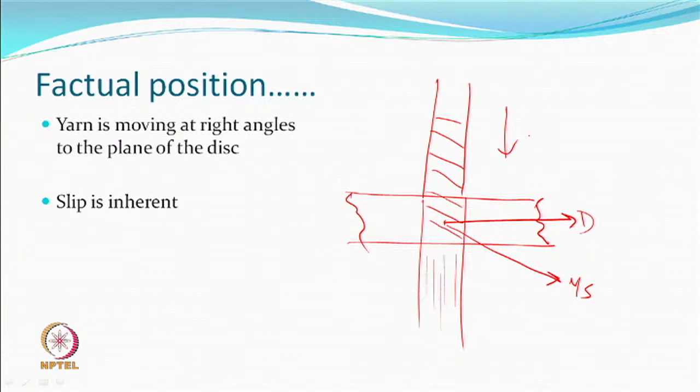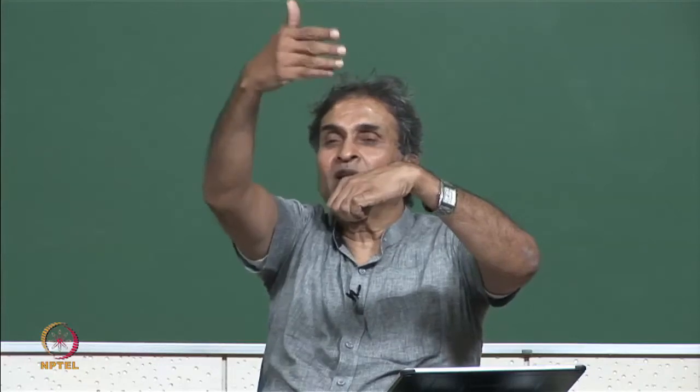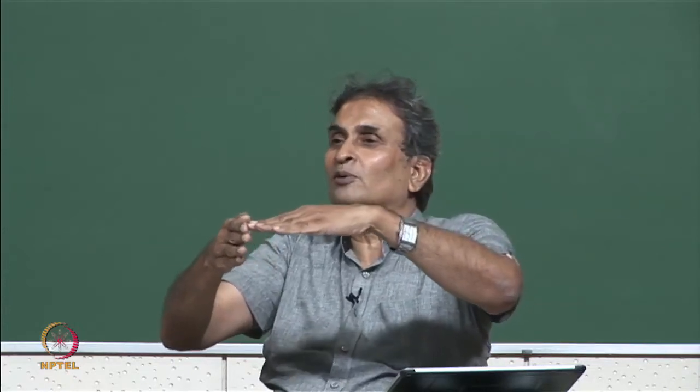The current factual position is that you have a disc which is rotating in a plane. The disc is rotating in a plane. The yarn is coming vertically from top to bottom. This is the disc and this is the disc surface. Once your yarn is coming vertically, it is making a wrap angle. Otherwise, the plane of the yarn and the plane of the disc is at right angles.